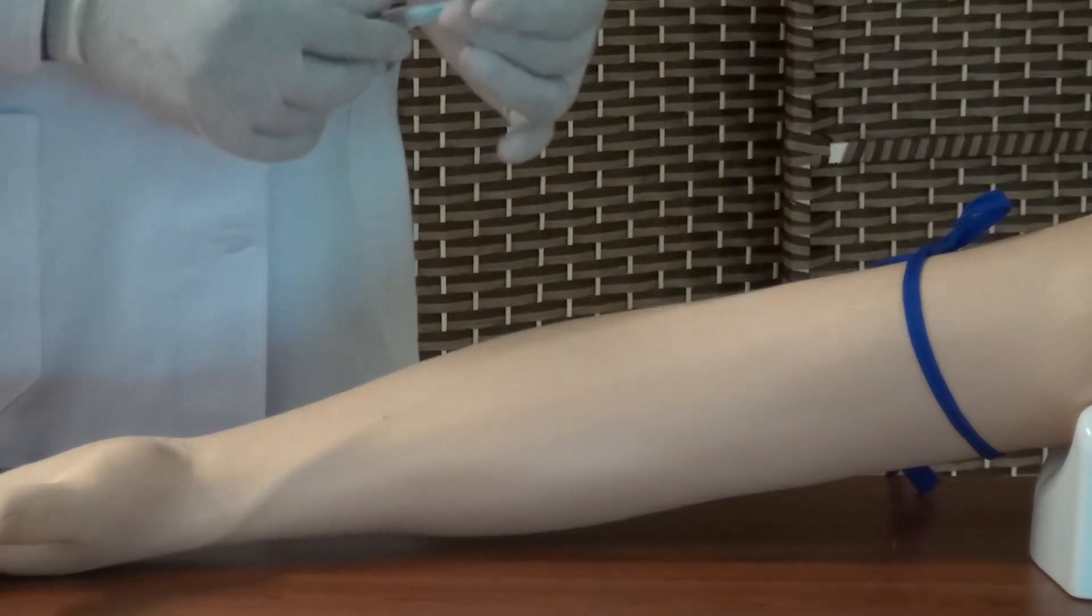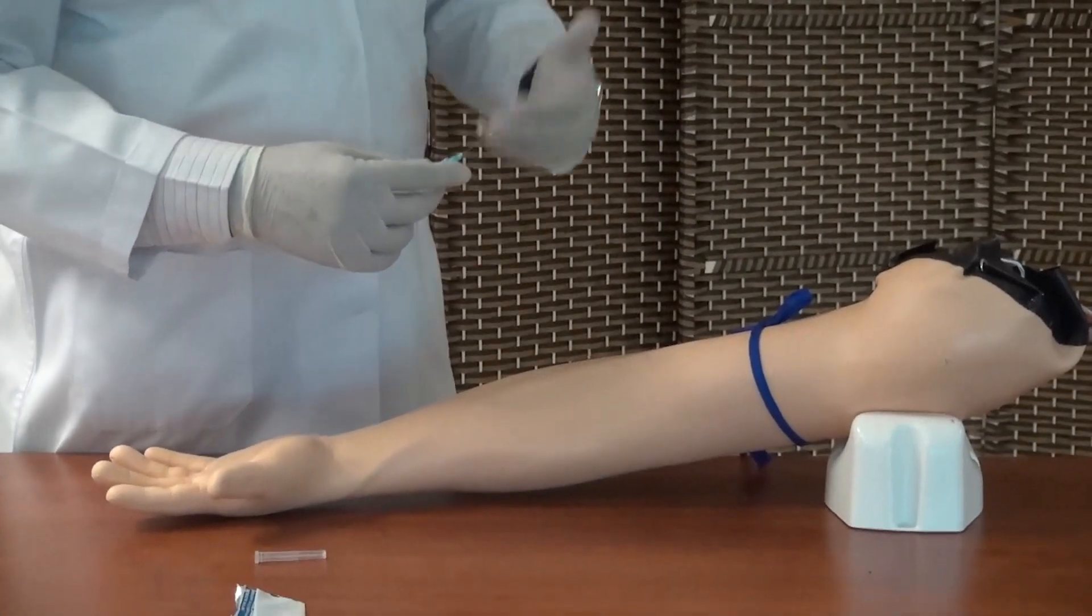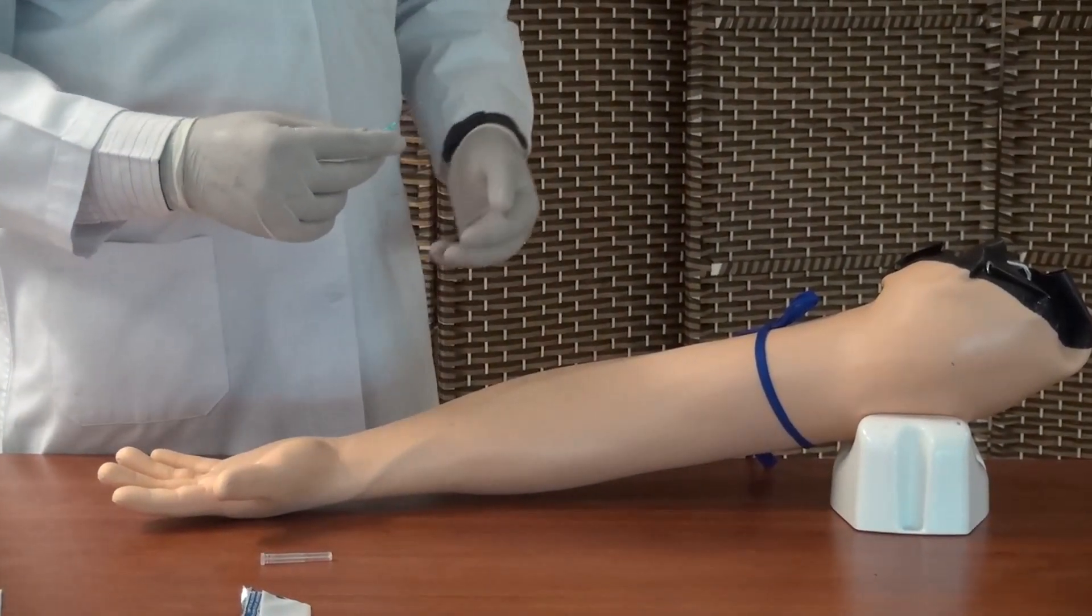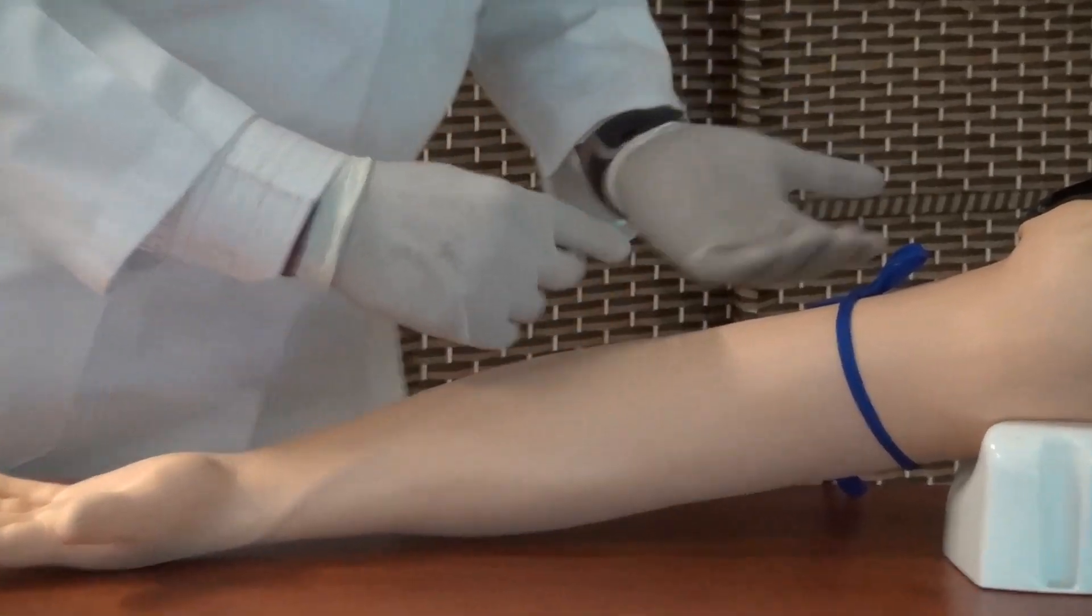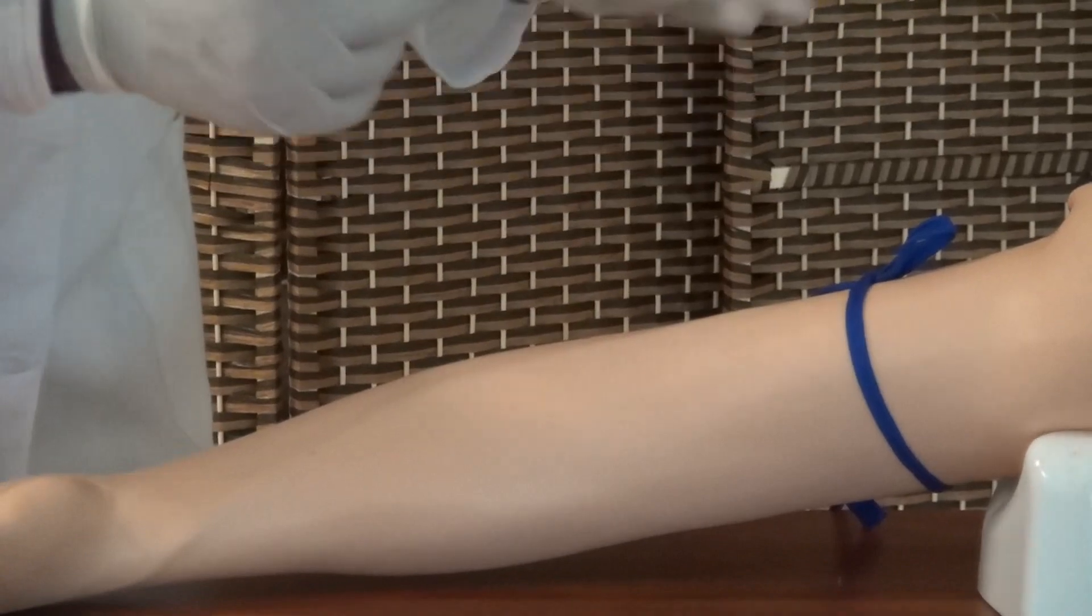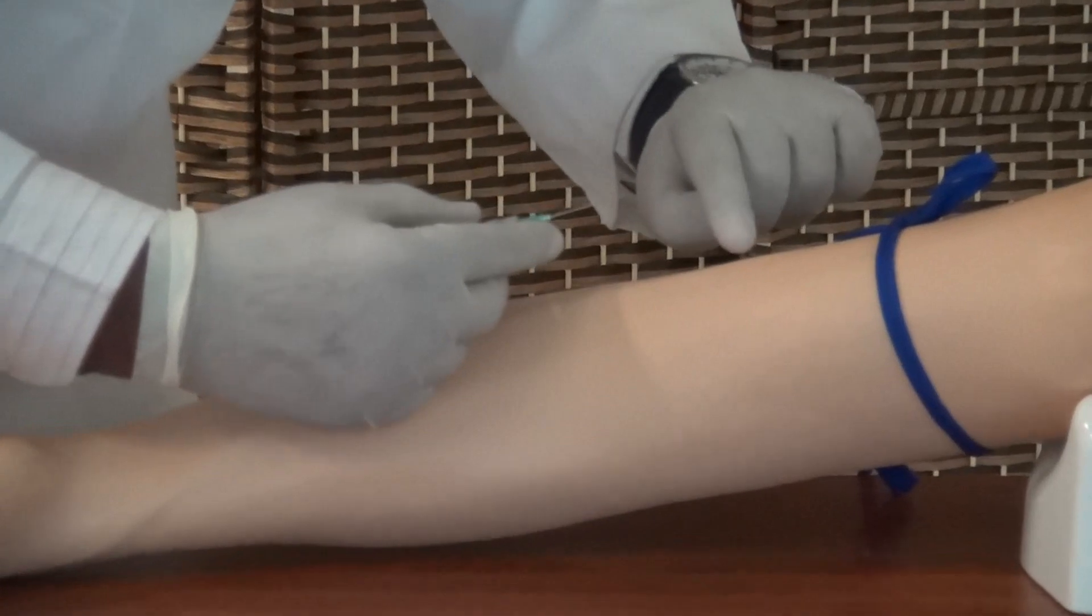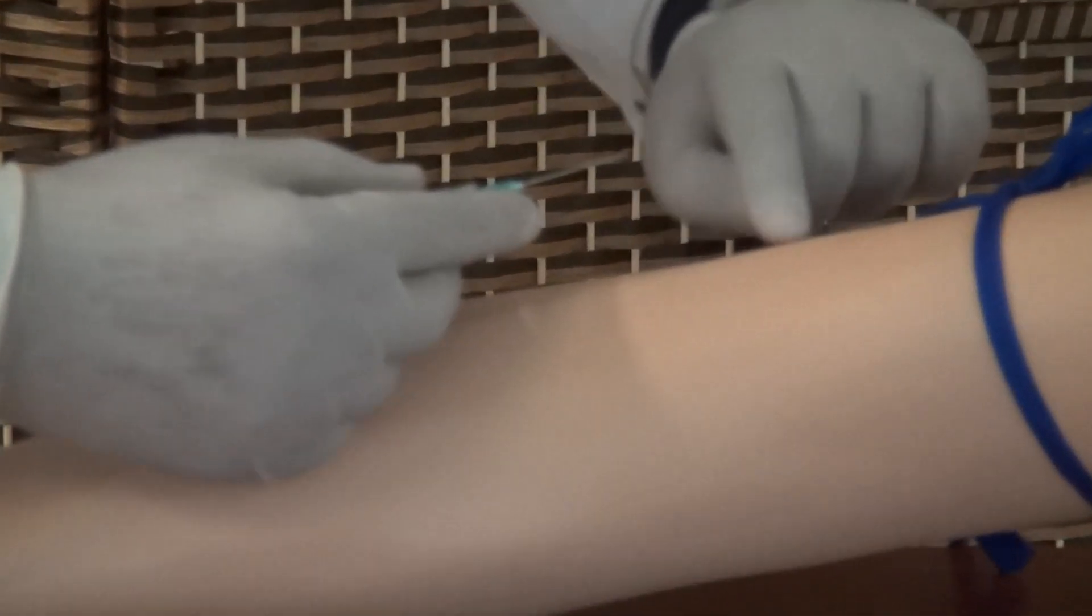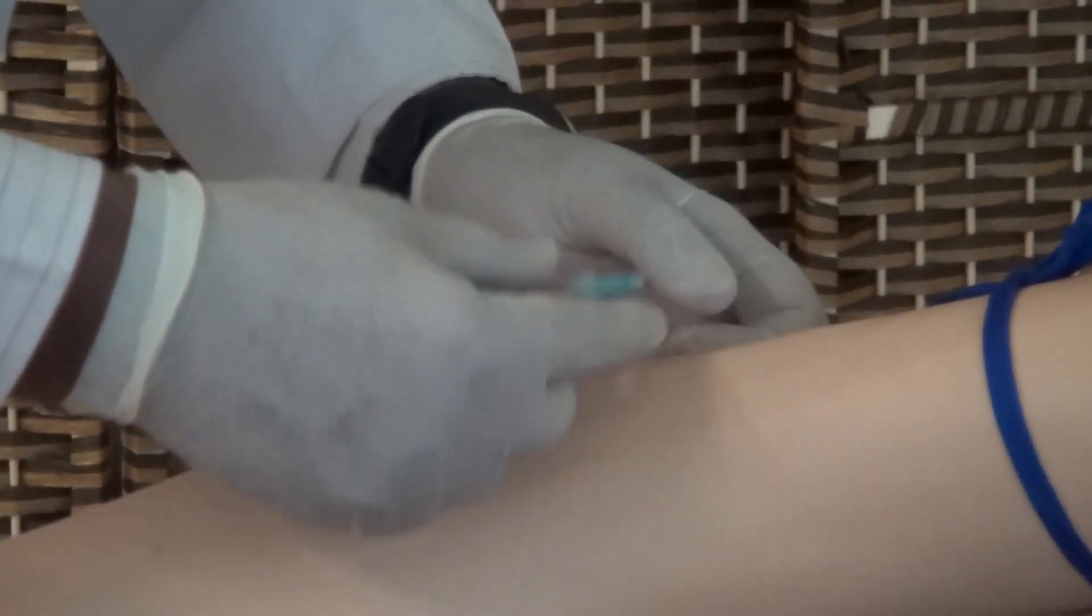I will again ensure there are no bubbles. Bevel always up. These are superficial veins, so you would enter at an acute angle, maybe around 20, 25, but less than 30 degrees. So here we locate, this is the point which I aim to get into. Here we go. Bevel always up. The cut part of the needle should be up.